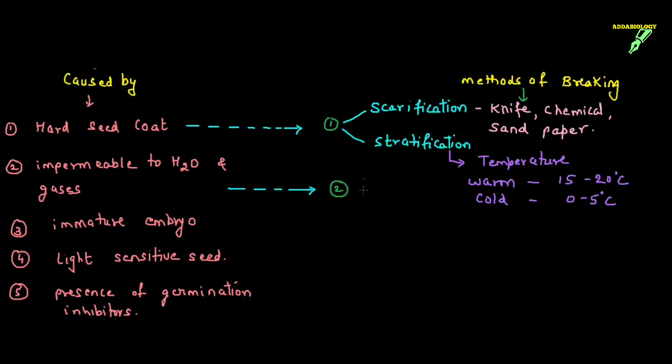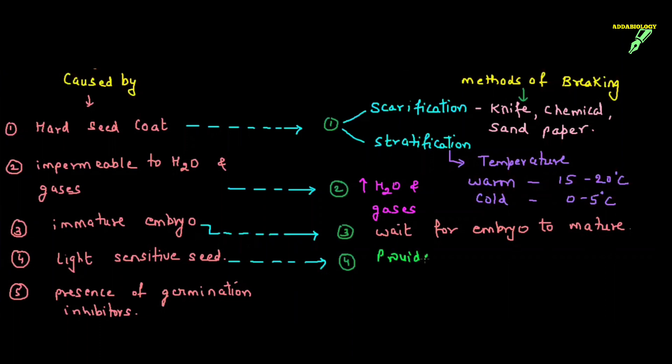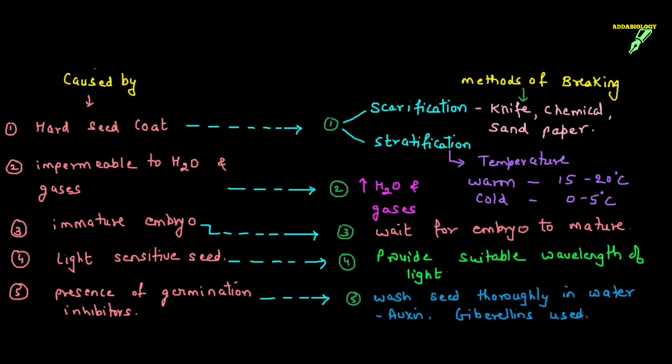Second is impermeable to water and gases. So what we need to do is supply huge amount of water and gas to the seed so that it germinates. Then the third reason is immature embryo. Under immature embryo, we don't have any option. We have to wait for the seed to get matured. Once the seed embryo gets matured, then only the seed can germinate. Light sensitive seeds need specific wavelength of light, it can be blue color or red color wavelength light. Last, we have presence of germination inhibitors. So what we need to do is wash the seed thoroughly in water so that the germination inhibitors get easily removed. We can use some hormones like auxin, gibberellins, etc.